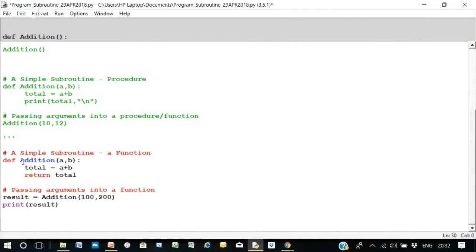We've got def, define a function called addition, and you're passing in two parameters, a and b. And then you are adding those parameters. Total equals a plus b return total. So what's happening here? To call it, we've got this statement: result equals addition 100, 200. So we are passing in two arguments, 100 and 200.